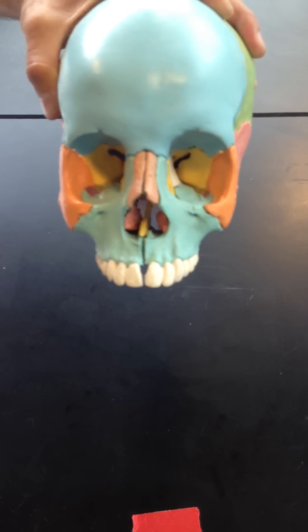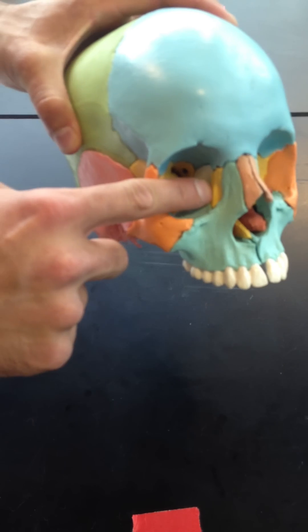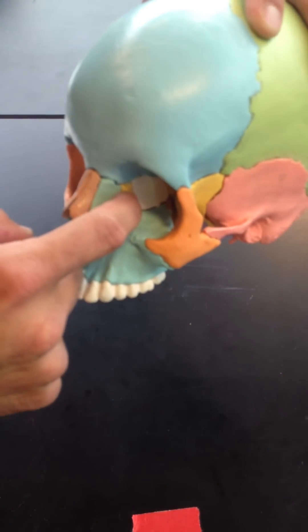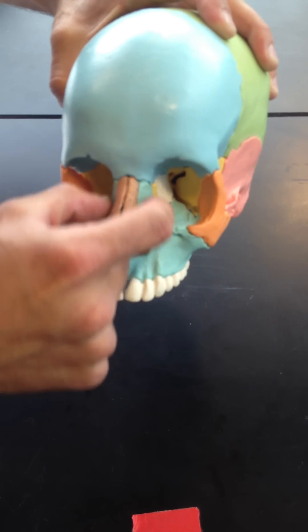So first, I'm going to talk about the lacrimal bones. There's two of them. One right here, seen in yellow, and one right here. They run just lateral to the maxillary bone.